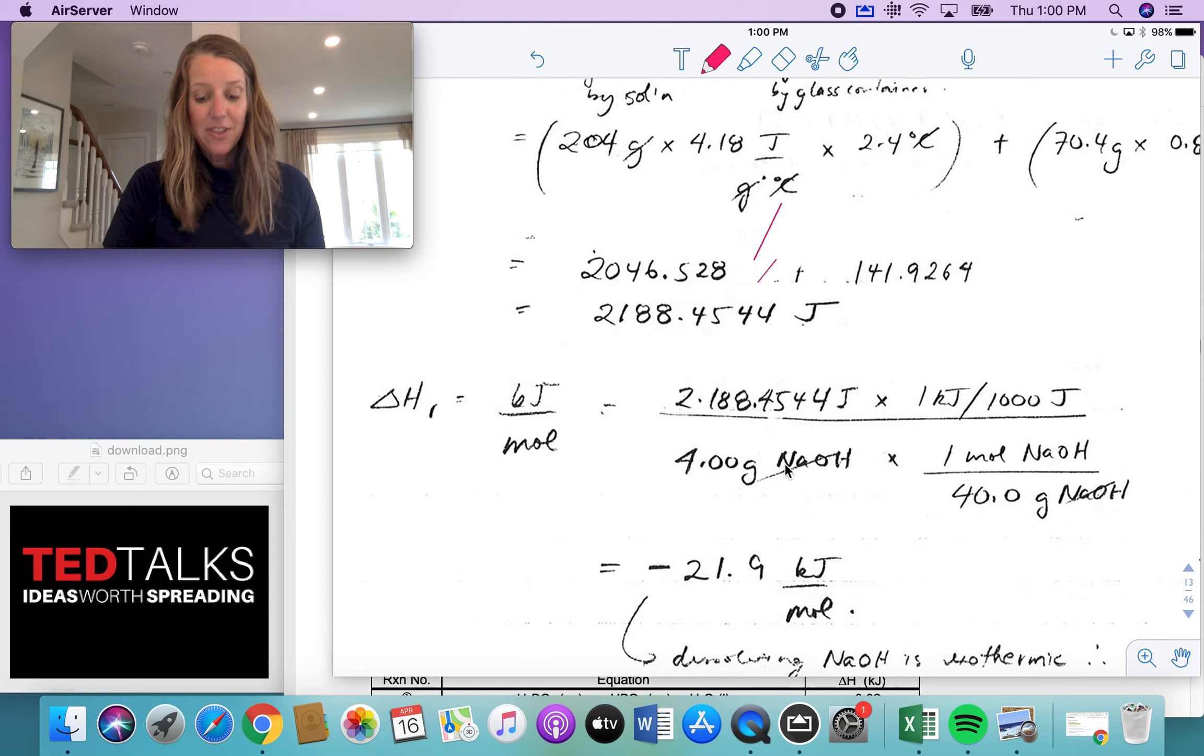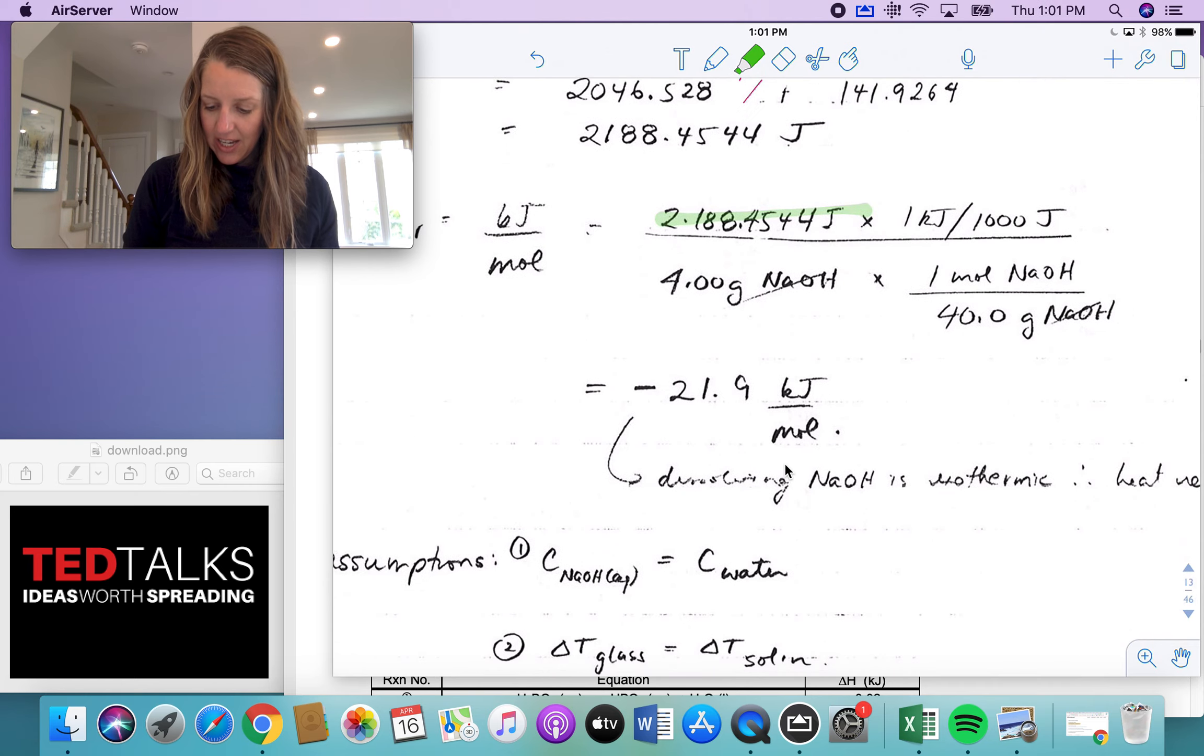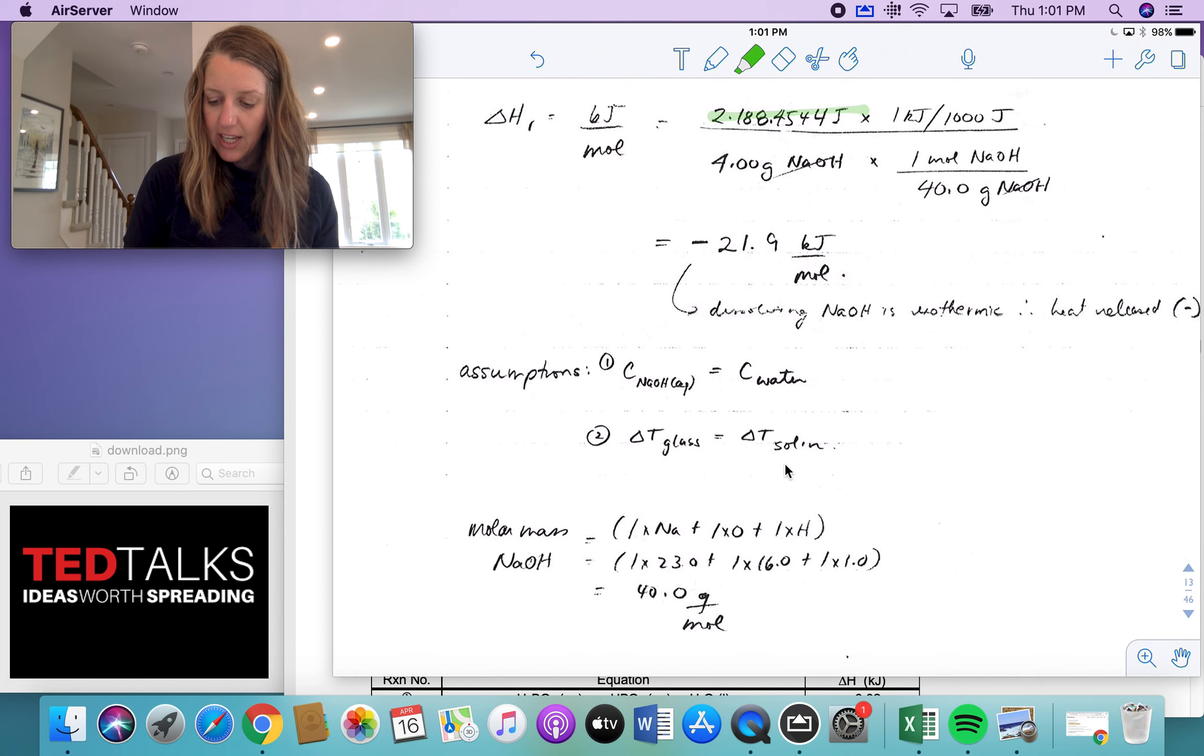Okay now what if the enthalpy for the reaction, you want to reflect that as kilojoules per mole. Well then we just have to go back to how many moles did we have of the sodium hydroxide. Okay so we can convert our joules into kilojoules. Okay and that's right there and we're dividing that by the number of moles that we had and I know that the calculation for calculating the molar mass was down here.